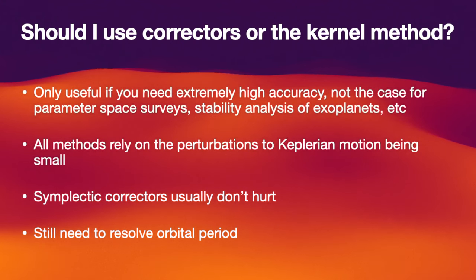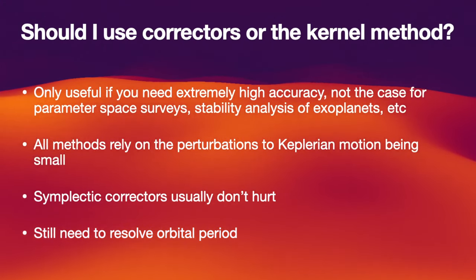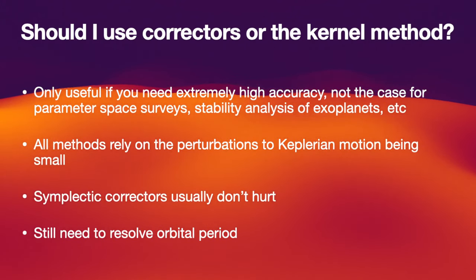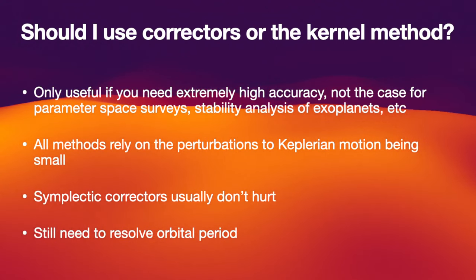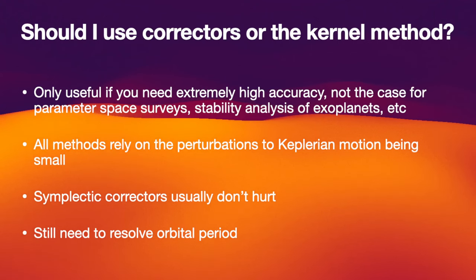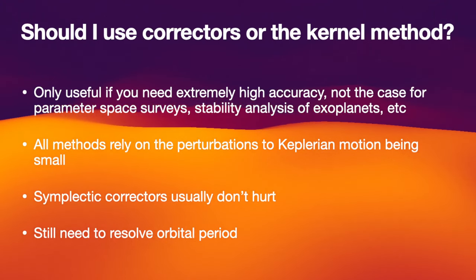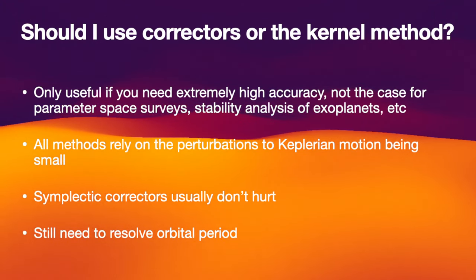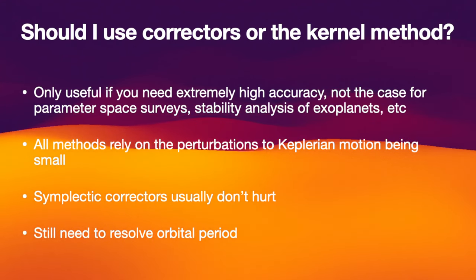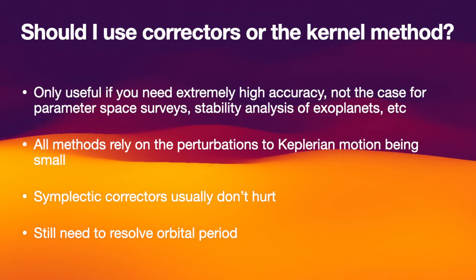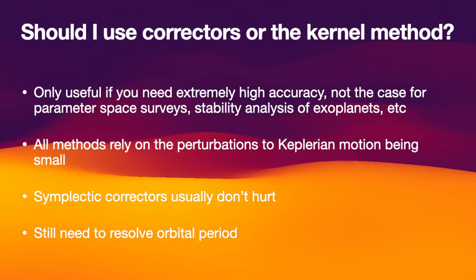Furthermore, all these methods that we've talked about in this video make use of the fact that the Keplerian motion is the dominant part and all the perturbations are small. This is the case for planetary systems, but you exclude a lot of cases like close encounters, collisions, any orbit crossing. As soon as these events happen, none of the methods talked about in this video are good anymore.